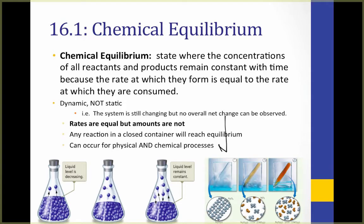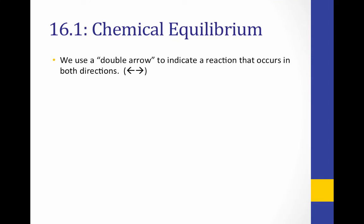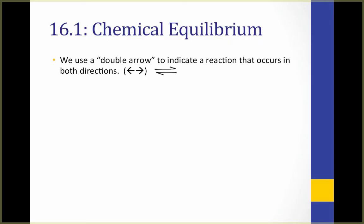Looking at a chemical example, when we first put N2O4 gas in a container, it will begin to break down to form some NO2 gas. After a while, some of this NO2 gas will start to react to again form N2O4. When the rate of the forward reaction (N2O4 to NO2) is equal to the rate of the reverse reaction (NO2 to N2O4), we'll be at equilibrium. A sign of equilibrium here will be the constant color of the container — since NO2 is a brown gas, a constant amount of NO2 means a constant brown color. We use a double arrow to indicate a reaction occurs in both directions or is at equilibrium.